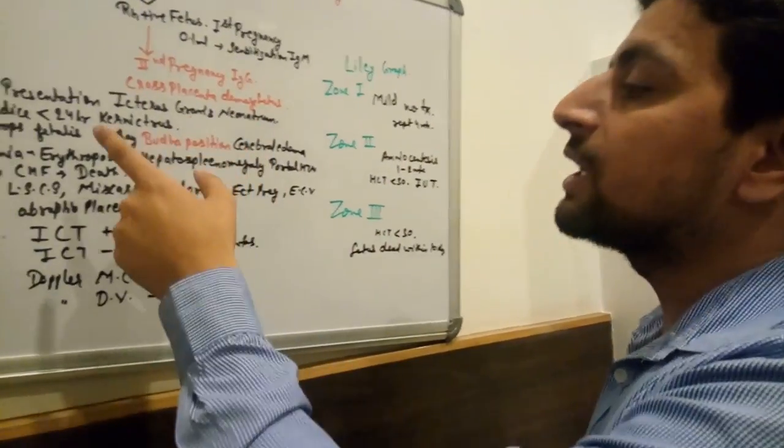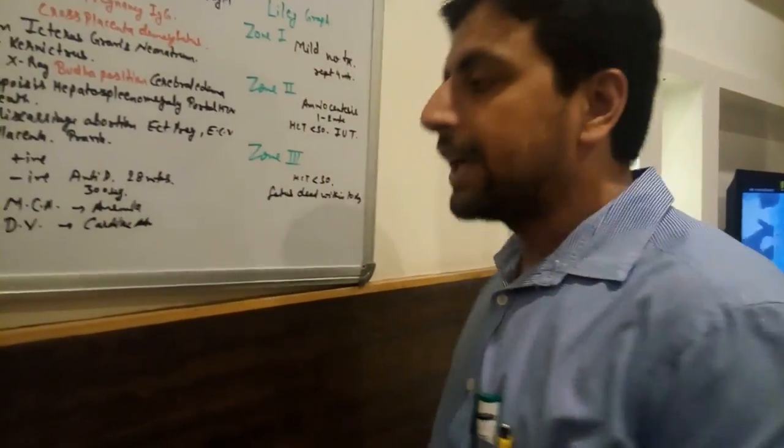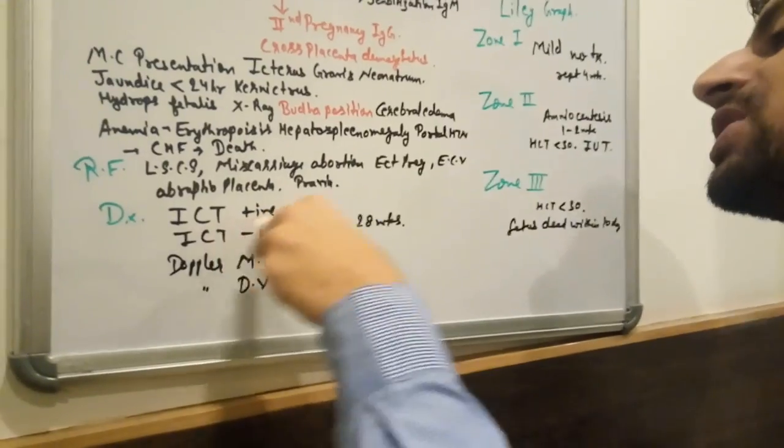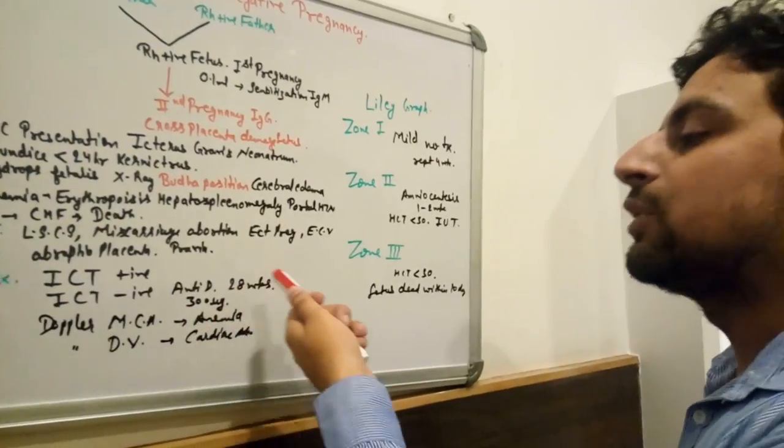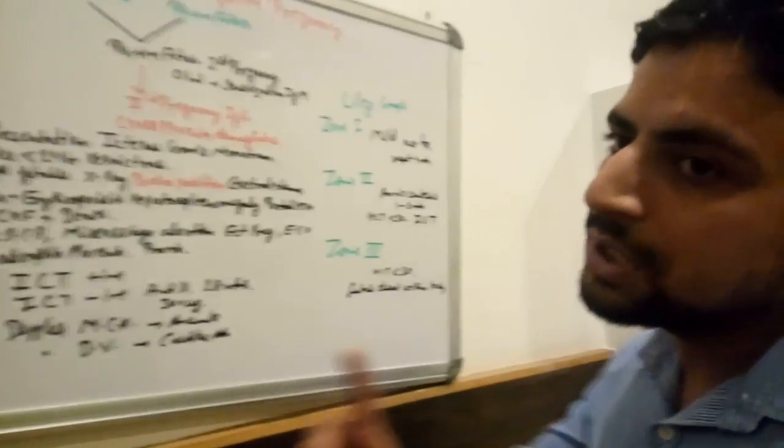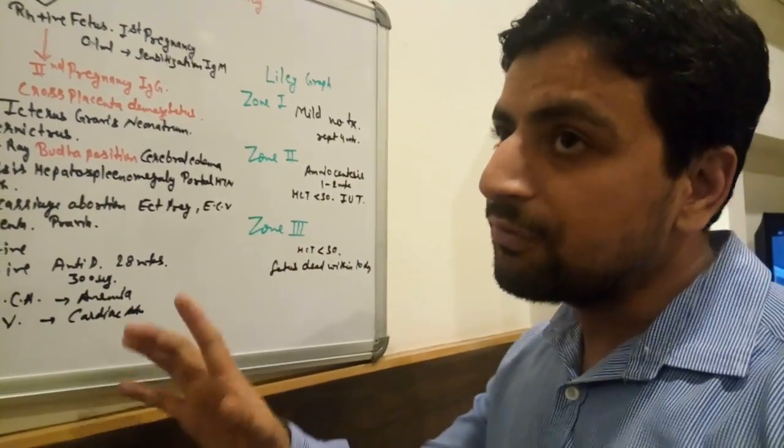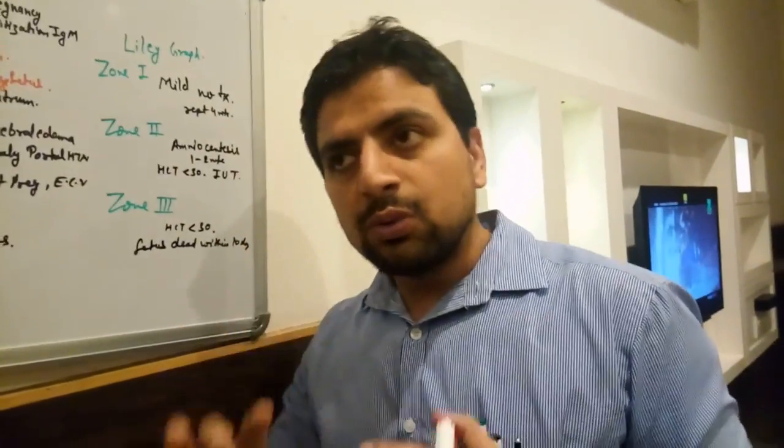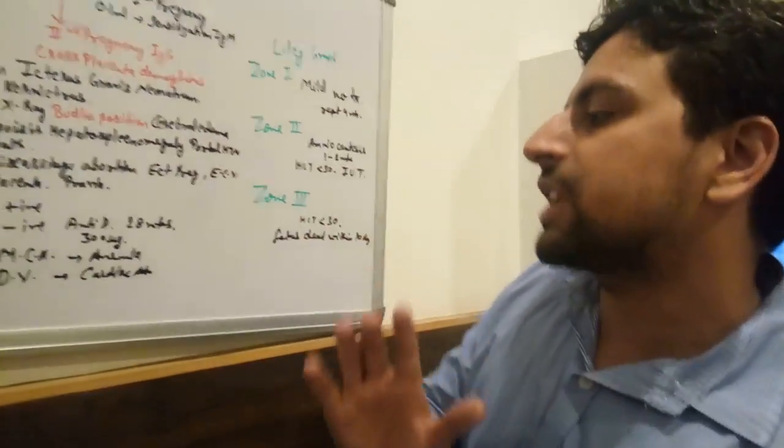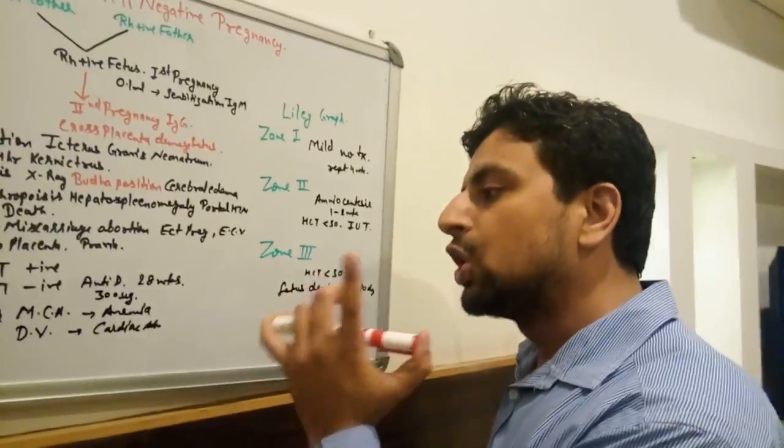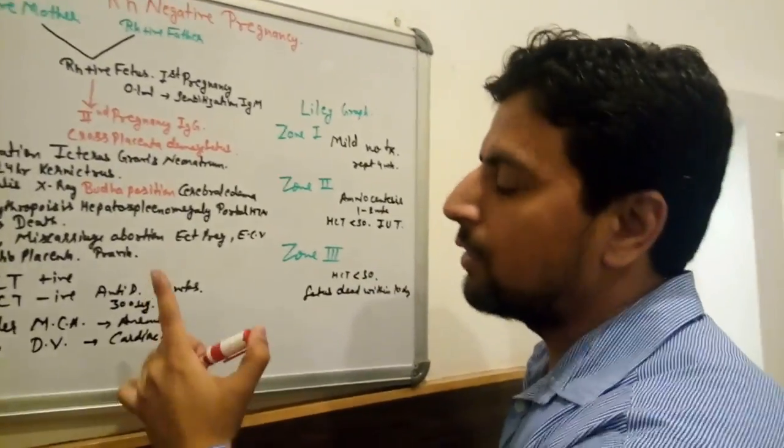If indirect Coombs test is negative, then we need to give anti-D to mother at 28 weeks, and the dose is 300 micrograms. If she is going to terminate her pregnancy before first trimester, then she needs only 50 micrograms of anti-D.